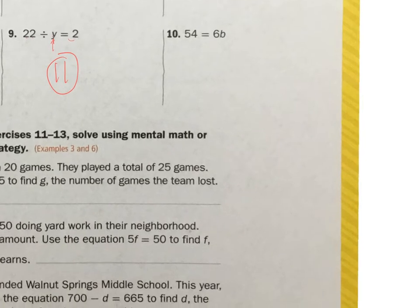Number 10. We have 54 equals 6 times b. So what times 6 is going to get me to 54? I could go with 6 times 1. 6 times 2 equals 12. It's going to take me a while to get to 54. So I'm going to go up to 10. 6 times 10 equals 60. That's too much. 6 times 9 equals 54, which is what I want. So b equals 9.